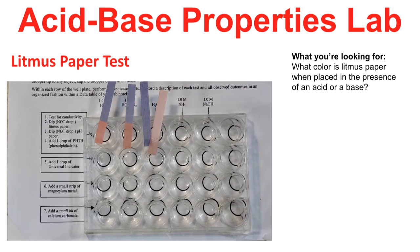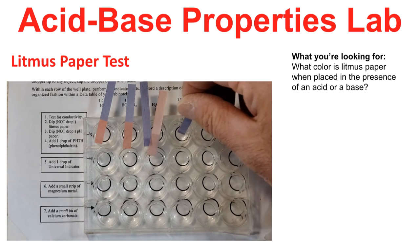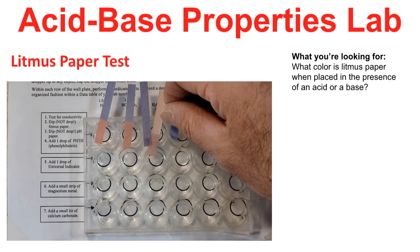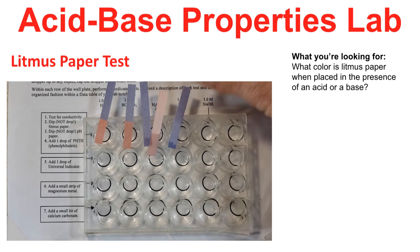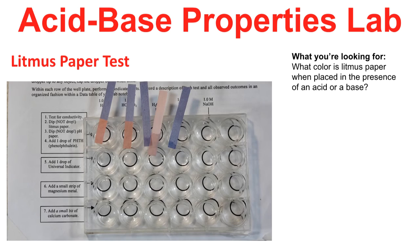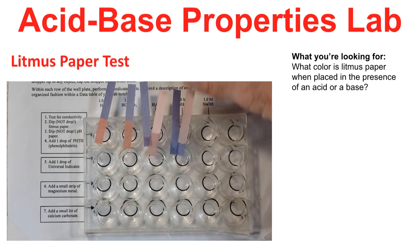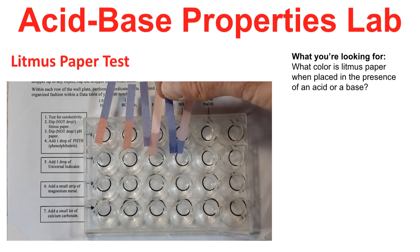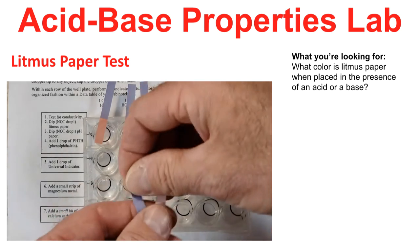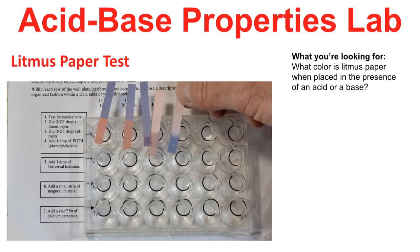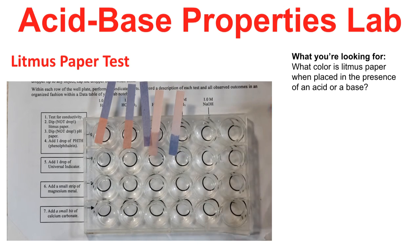Now we're going to put the litmus paper in the basic solutions. In NH3 first — the blue goes in and it doesn't turn color. So we try the red, and the red litmus paper turns blue. It appears that litmus paper will be blue when placed in a basic solution. We test our final solution, NaOH, with red litmus paper, and the red turns blue again.